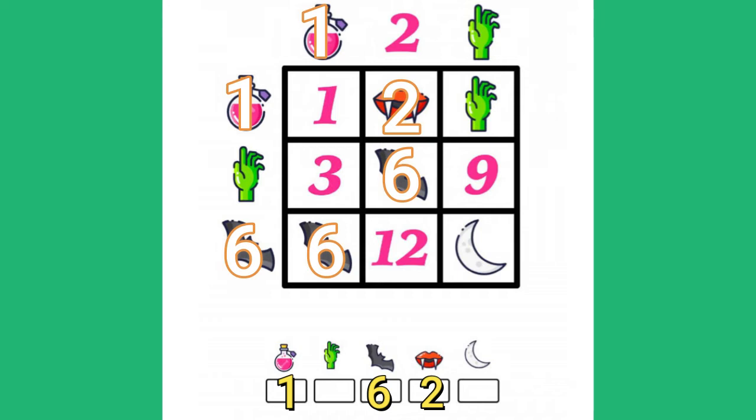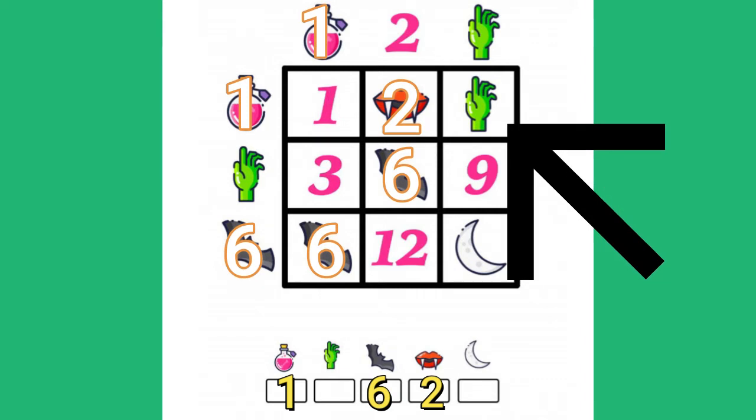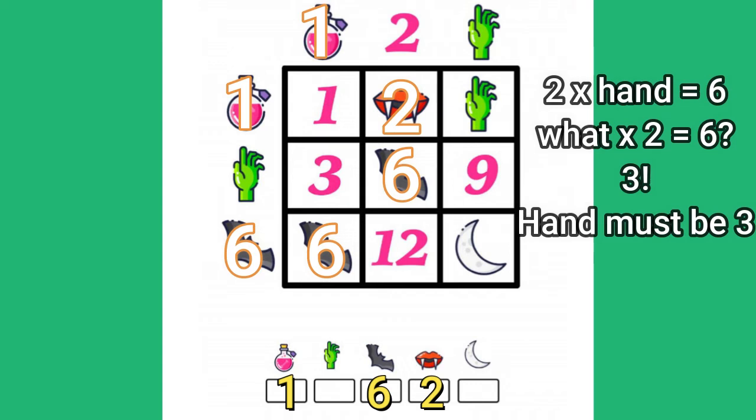Now I can figure out what the hand is. Because in the middle, the bat is 6. So 2 times hand equals 6. So the hand must be 3.